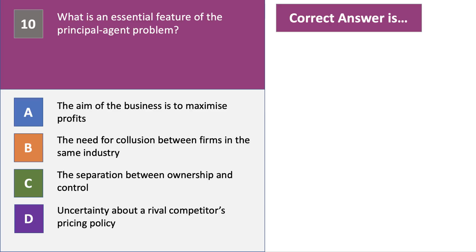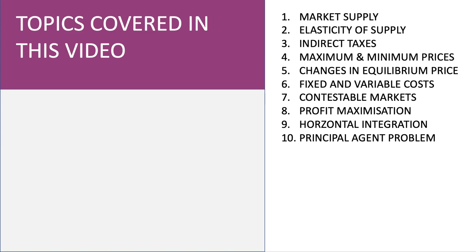The principal agent problem is when the owners of a business, perhaps the shareholders, cannot directly or easily observe what the agents — perhaps the managers — are doing in terms of price, output, R&D, advertising and so on. The essential feature is the separation between ownership and control: distant shareholders are unable to fully keep up with the day-to-day decisions of a company. Here are the 10 topics covered in this video — there'll be several of these ahead of the synoptic paper in micro and macro. Thank you for joining.